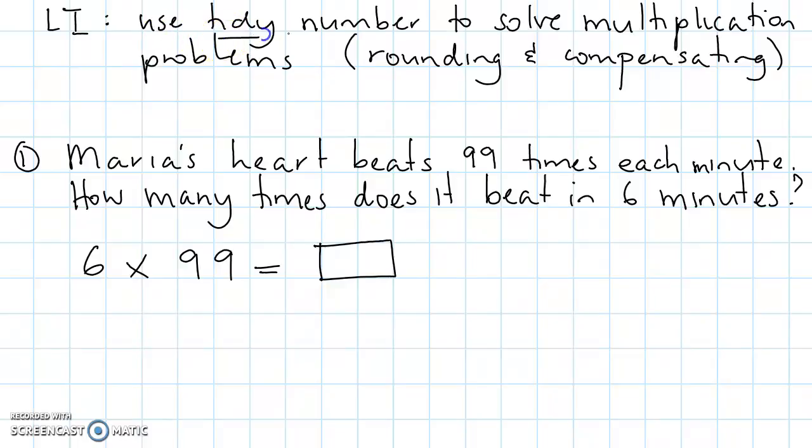Use tidy numbers. What's the nearest tidy number to 99? It's 100. So it would be 6 times 99 equals 6 times 100.